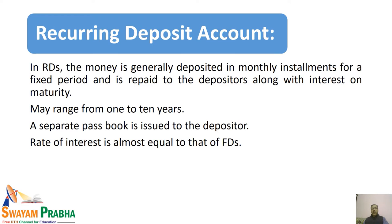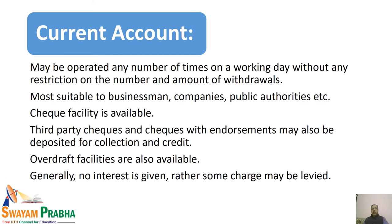The rate of interest on an RD is almost equal to the prevailing FD rate. When an RD account is opened, a separate passbook is issued and entries are recorded in it. If you have a saving bank account in the same bank, you can instruct the bank to automatically debit your saving account on a specific date each month, continuing until the end of the RD period, after which the maturity amount along with interest is returned.